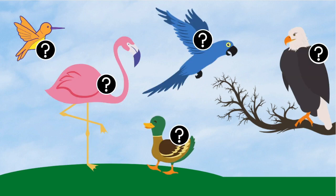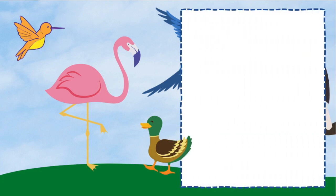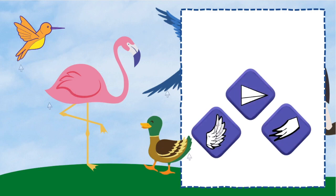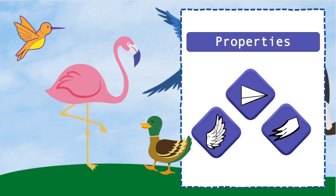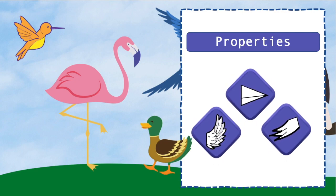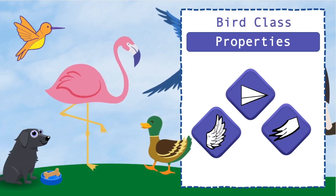Which of these objects is a bird? If you guessed all of them, you are correct. How did you know that just by looking at them? I bet the wings, bill, and tail on each one gave it away. These are some properties or characteristics that all birds have in common. You likely have never seen a bird without these traits because these are the things that define the bird class. They help you tell a bird apart from something like a dog.